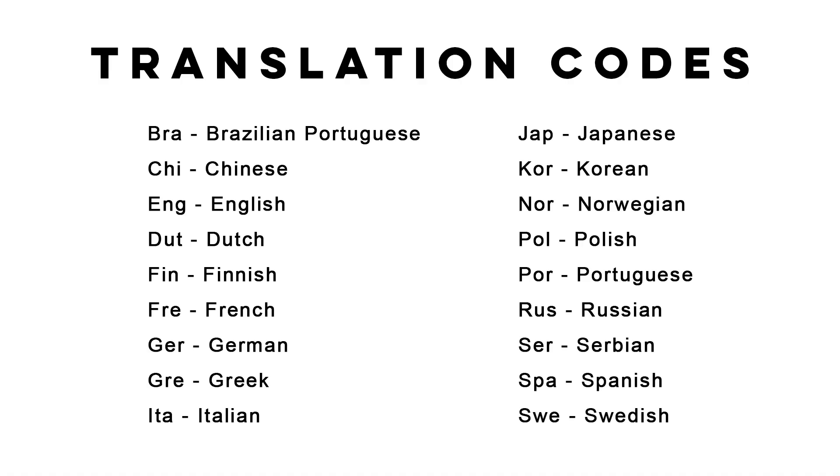Finally, we have translation codes. These codes will tell us what language the ROM is in using a three-digit abbreviation of the language, if the ROM has been translated into another language. These codes are pretty straightforward. There are other codes, but most are system-specific. I've added a link in the description that can take you to a page with more info about codes that you may come across looking at ROM names.